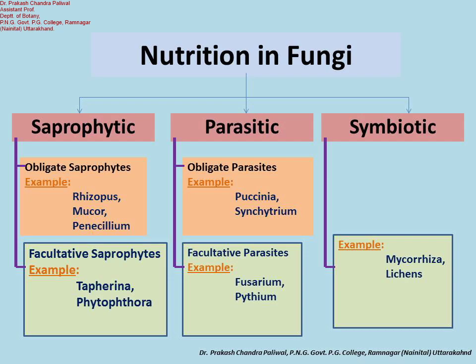Fungi absorb nutrients by secreting enzymes that convert complex insoluble molecules — such as cellulose, starch, and proteins — into soluble forms. Whatever the substrate, the digested material is absorbed in solution directly through the walls of the hyphae. Some fungi have specific structures for the absorption of food. The digestive enzymes of true fungi control hydrolysis reactions, which convert various complex substrates into simple components.